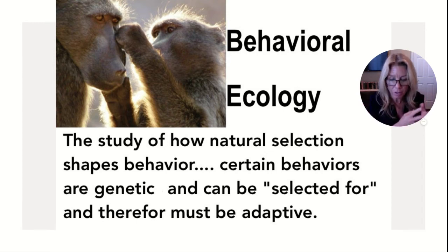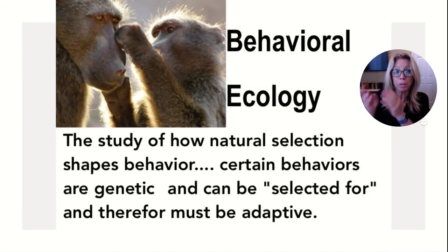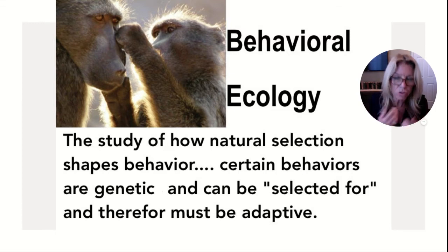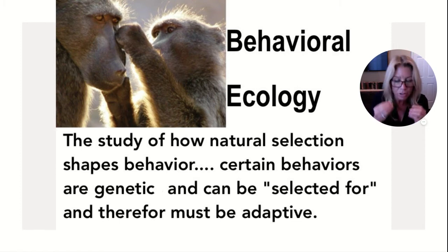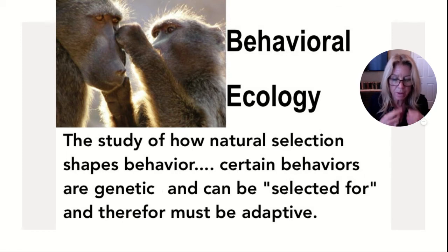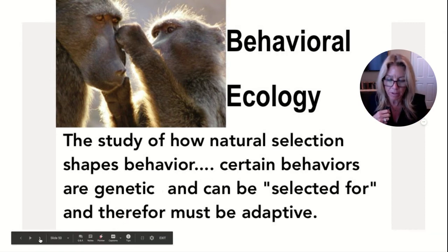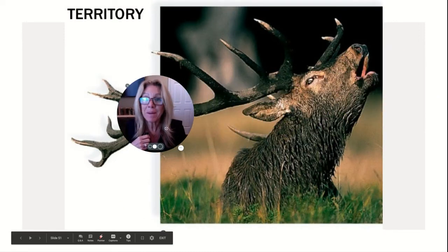The idea is that certain behaviors — like grooming one another — must have a genetic basis, and we looked at some evidence for that in video one. Those certain behaviors lead to increased survival. There's some sociobiology going on in grooming, bonding together, and you get a tasty little snack. This increases the production of offspring; therefore, behaviors that we observe today must have some adaptive value.